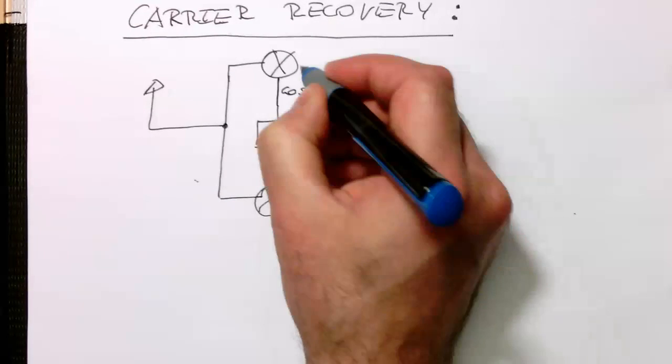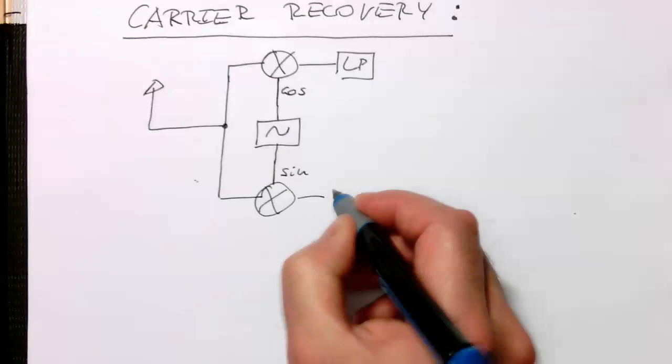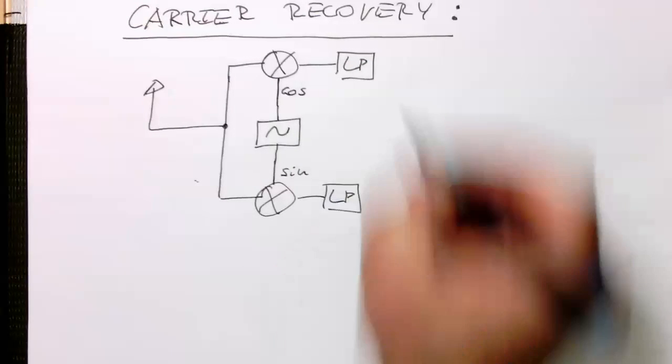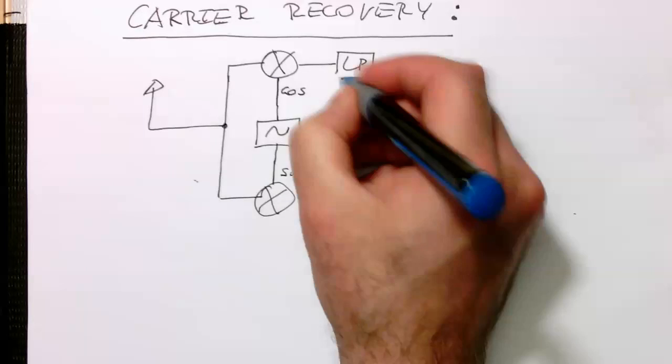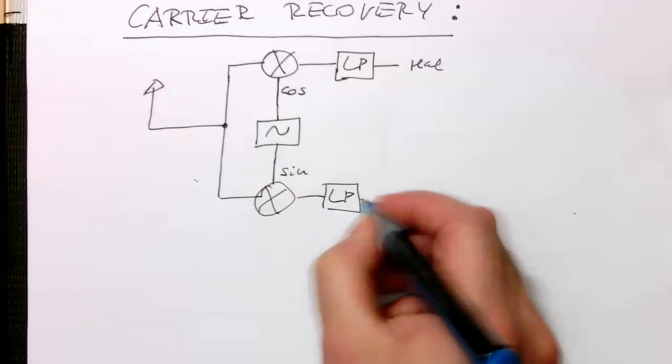And then what we do here is we do a low pass filtering. We also do here low pass filtering. And then here we've got our real part out there. And this is our imaginary part.